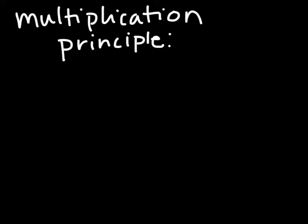If one event can occur in m ways, and for each of these ways a second event can occur in n ways, then the number of ways the two events can occur together is m times n. The multiplication principle can be extended to three or more events as well.